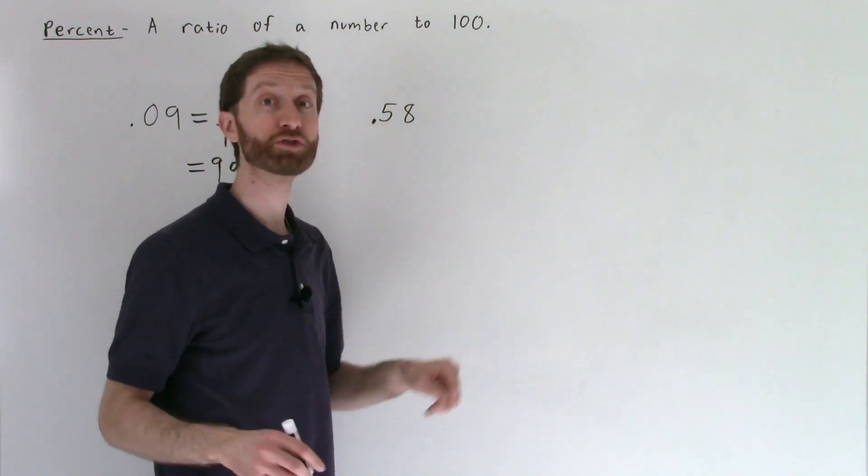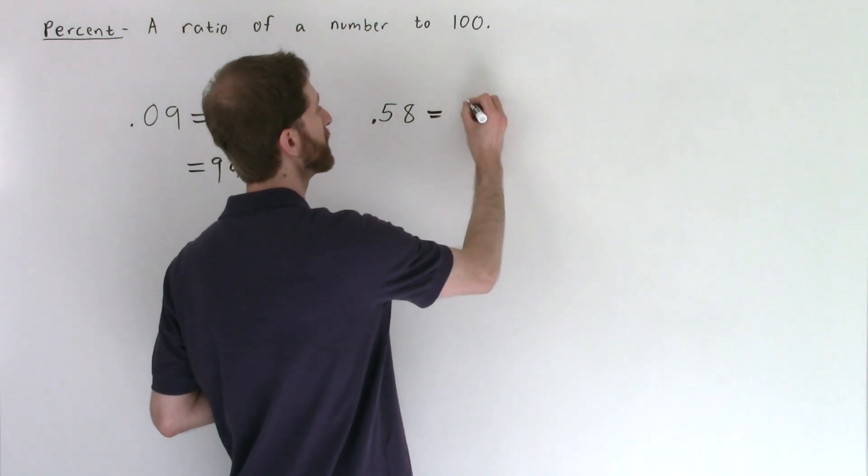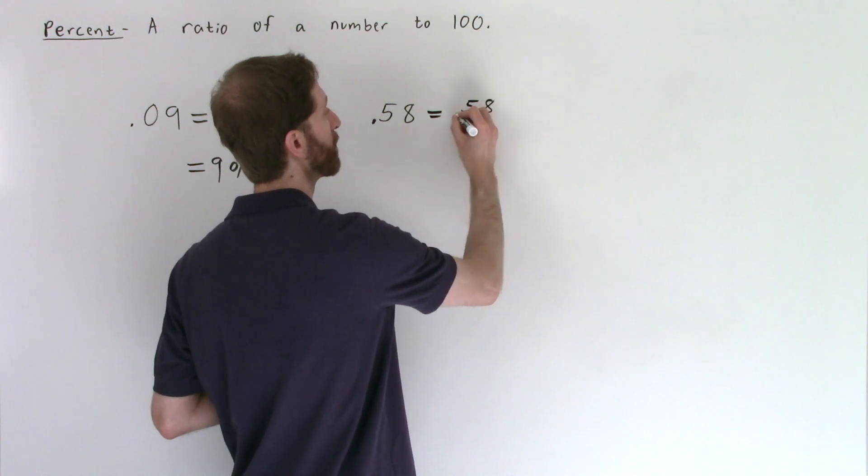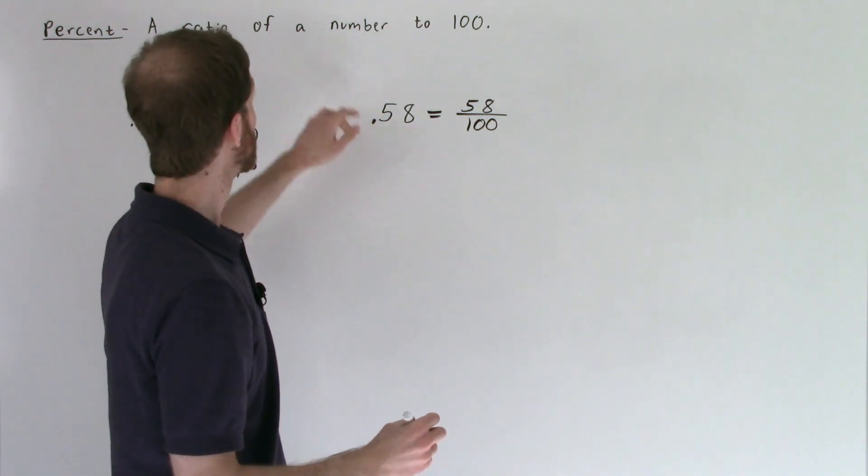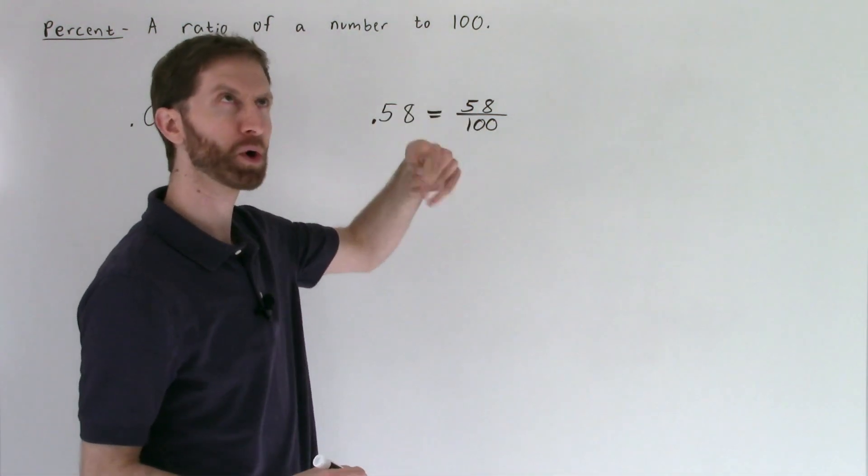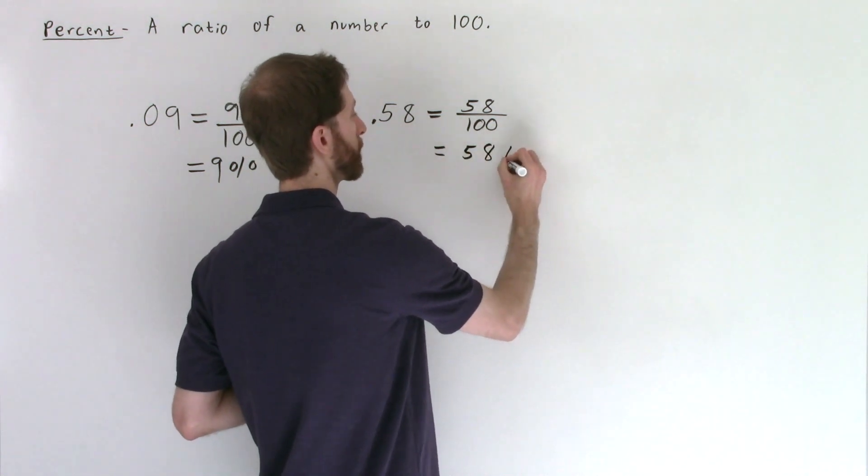Point five eight is read fifty-eight hundredths. So at least in the noggin you should be thinking—the noggin being your brain—fifty-eight out of one hundred. Or fifty-eight per one hundred. Fifty-eight per one hundred percent. So this is equal to fifty-eight percent.